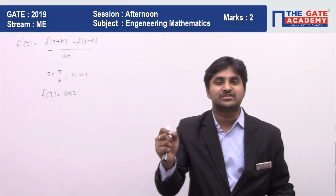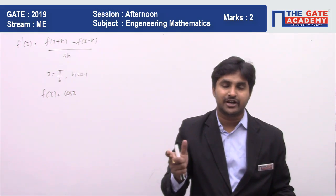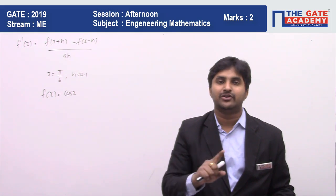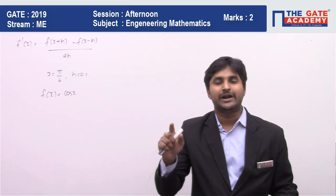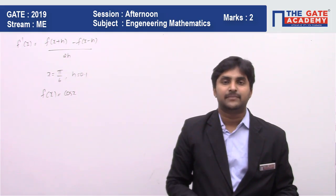So if you put the value of x = π/6, whatever value you are going to get, true value minus approximate value divided by true value multiplied by 100 is going to give you the percentage error.